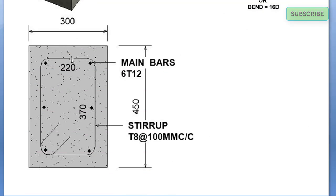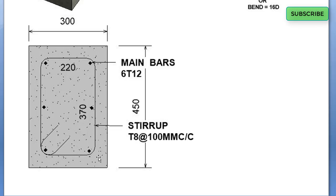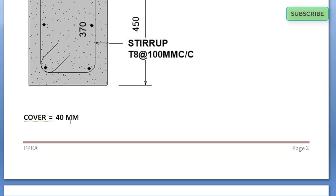From the drawing, there are six main bars, T12 — 12 mm diameter. The stirrups are T8, 8 mm diameter, at 100 mm spacing center to center. The cover is 40 mm, so the stirrup dimensions are 300 minus 80 giving 220 mm, and 450 minus 80 giving 370 mm.